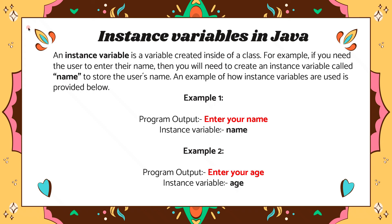As an example here, we have program output that says 'enter your name,' and the instance variable we're going to create is called 'name.' One very important thing to note is that the variable should be reasonable and meaningful — something that relates to what you're asking the user to enter. So 'name' would be the most reasonable variable to create to store the user's name.